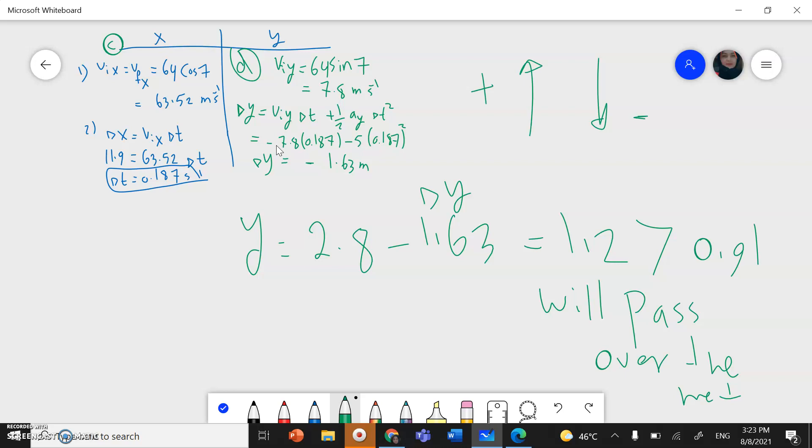Moving up is positive. And the time we've calculated, which is 0.187, minus because the acceleration is moving down, 10 divided by 2 to give me 5 times time square. And we've got delta y negative 1.63 meter.